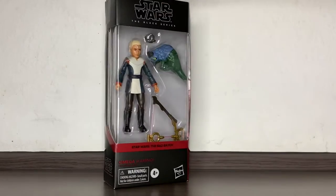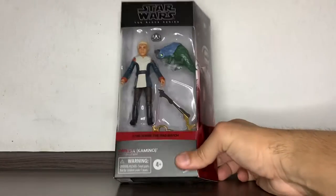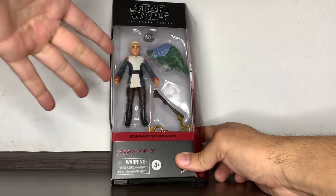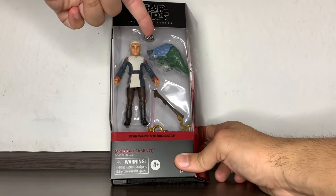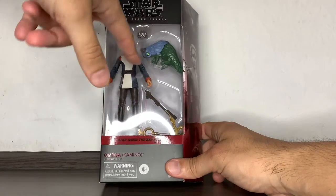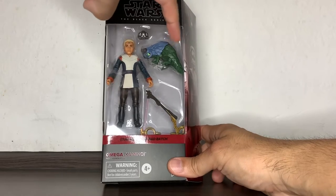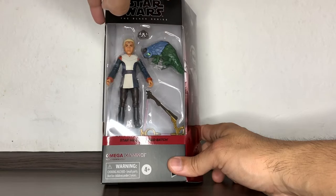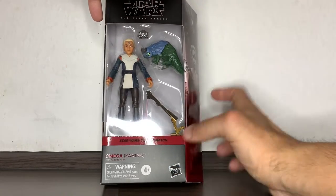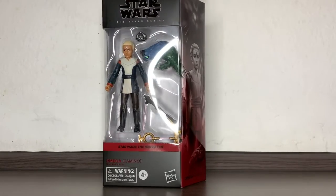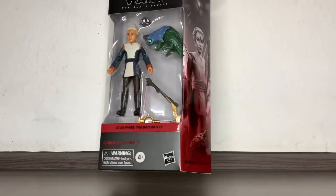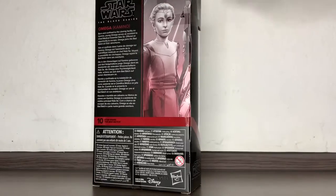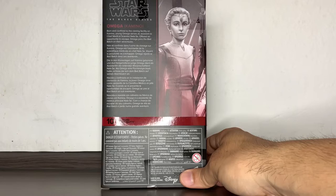She comes with herself, her breathing mask here for that underwater scene, this kind of intergalactic pangolin creature which I don't remember the name anymore, and her bow blaster or bowcaster thing that she gets during the series.